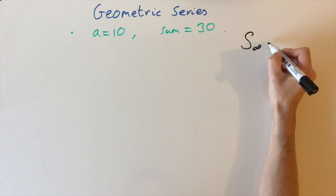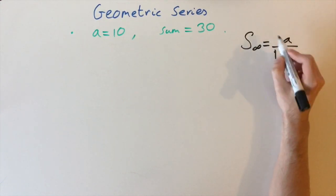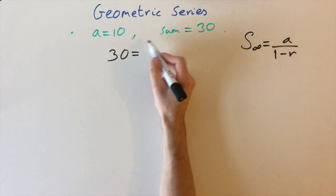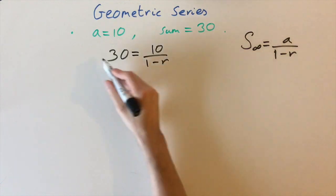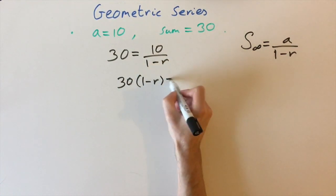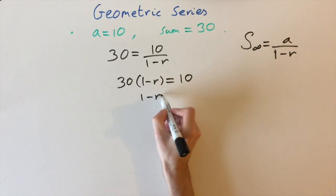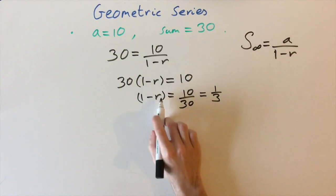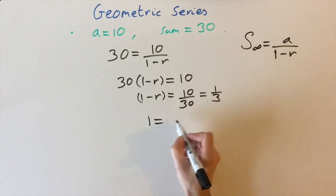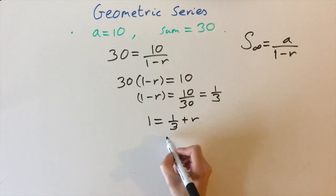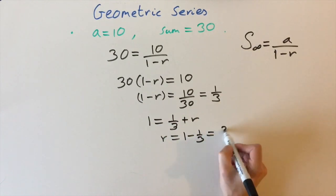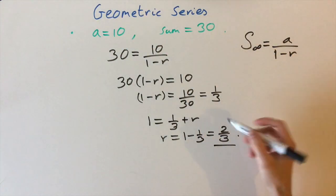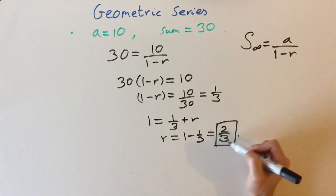Using the sum-to-infinity formula: S∞ = a / (1 minus r). We have three unknowns but are given two of them, so we solve for r. Plugging in: 30 = 10 / (1 minus r). Cross-multiplying gives 30 times (1 minus r) = 10, so 1 minus r = 10/30 = 1/3. Solving: r = 1 minus 1/3 = 2/3. This confirms r = 2/3, which is less than 1, so it satisfies the convergence condition.